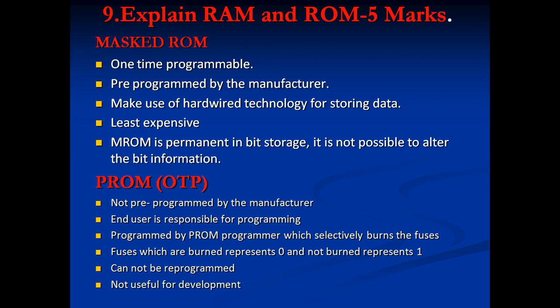First is Mask ROM — it is one-time programmable; you can't change it once programs are written. It is pre-programmed by the manufacturer. It makes use of hardware technology for storing data, making it unchangeable. It is less expensive and permanent in bit storage; it is not possible to alter the bit information. Next is PROM — Programmable Read Only Memory, also called One-Time Programmable (OTP) memory, not pre-programmed by the manufacturer.